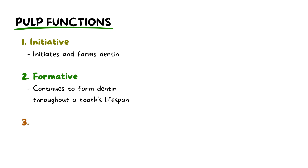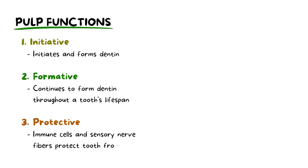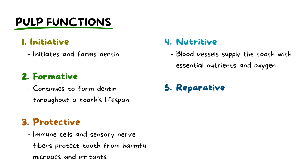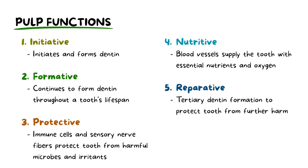Additionally, the dental pulp acts as a protective barrier against harmful microbes and irritants that may try to invade the tooth. It contains immune cells and sensory nerve fibers that can detect and respond to threats. Furthermore, the blood vessels within the dental pulp supply the tooth with essential nutrients and oxygen, which is critical for maintaining the vitality of the tooth and supporting its metabolic needs. Lastly, when the tooth is damaged due to factors like dental caries or trauma, the dental pulp has the ability to initiate reparative processes. It can produce tertiary dentine to help seal off and protect the pulp from further harm, promoting tooth health and longevity.